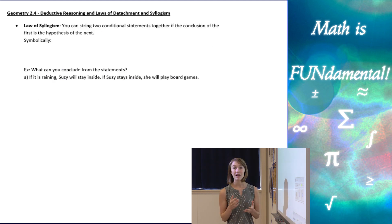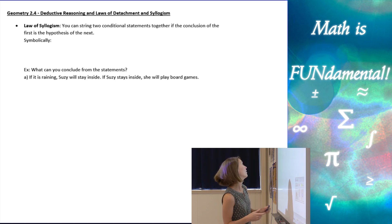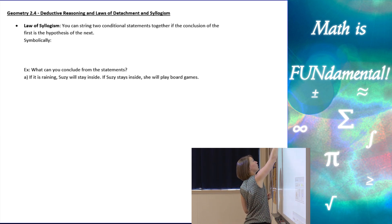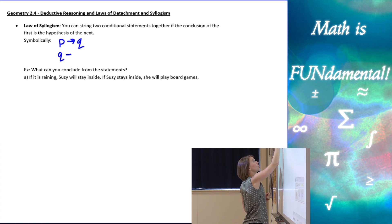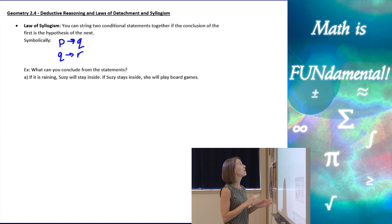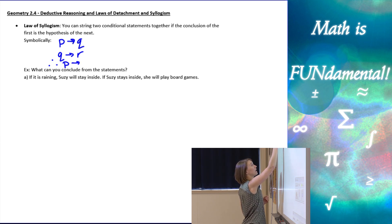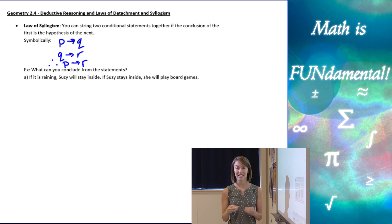The last piece of information: we have the law of syllogism. That states that you can take two conditional statements and string them together if the conclusion of the first one is the hypothesis of the second one. Symbolically, I have P then Q, and then Q then R. If I have those specific orderings, I can conclude the statement P then R — I can take out the middle piece, the Q.